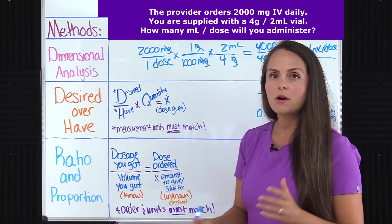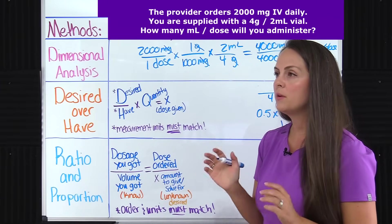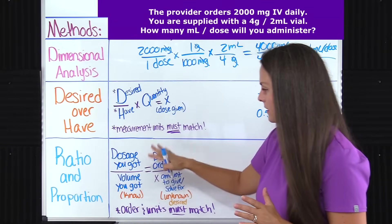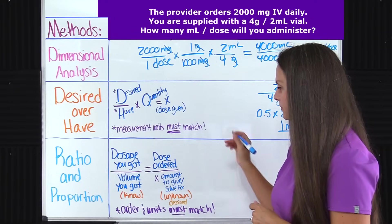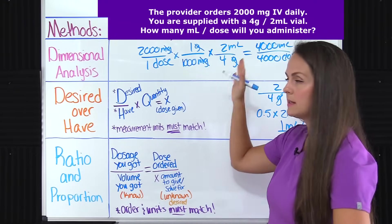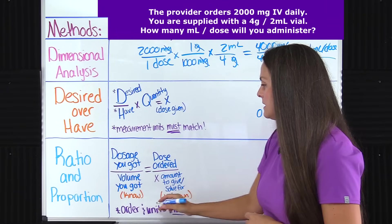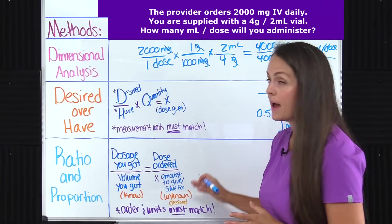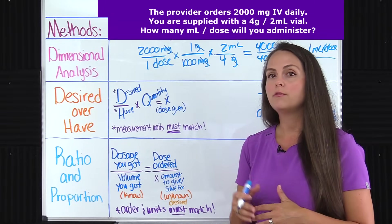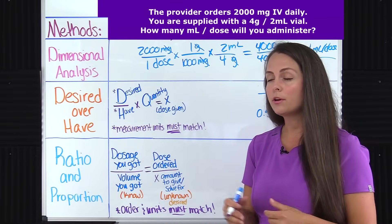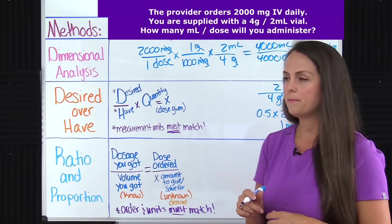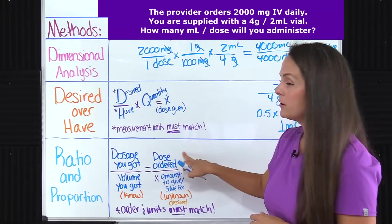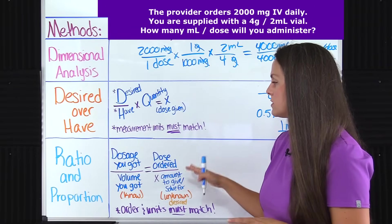Whenever you're working these problems, there are a couple of things to remember. With ratio and proportion, you cross multiply — multiply everything on one side, everything on the other, and they should be equal. You don't divide like in the previous problems. Also, make sure that the units of measurement are in the same order and that they match up. If they don't, you've possibly set up your problem wrong or you need to do some converting. For instance, if you have milligrams here and milliliters here, you need milligrams and milliliters in the same positions on both sides before you can proceed.